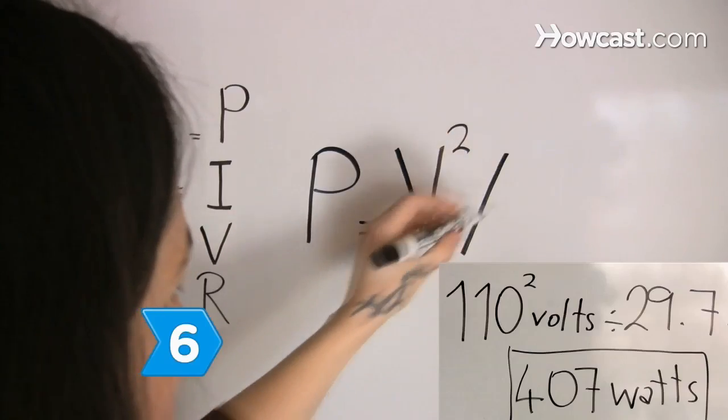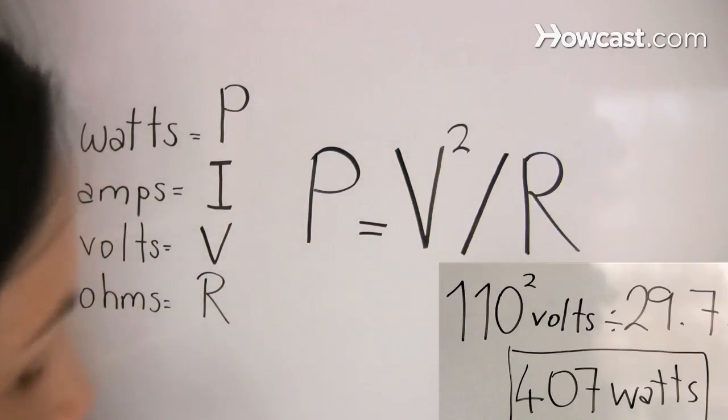Step 6. Calculate the wattage from the quotient of the square of voltage divided by the resistance.